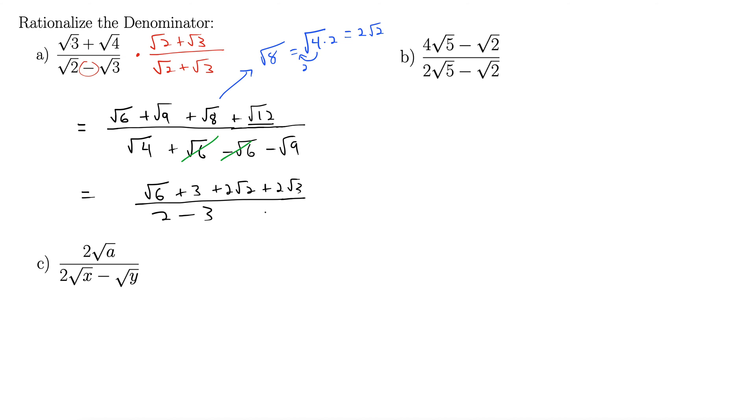2 minus 3 is negative 1. So, this whole thing is minus 3, minus rad 6, minus 2 rad 2, minus 2 rad 3. There we go.